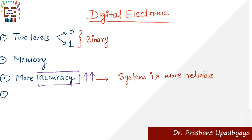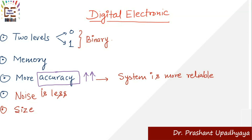The next thing is noise. Whenever we are talking about digital systems, the noise is less. Another important parameter for choosing digital electronics — one that you will always appreciate — is easy handling, meaning portability and compact design.